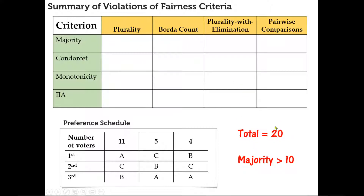Majority means more than half, so with 20 total votes, majority would be greater than 10. Under the plurality method, candidate A wins. Since A has a majority, plurality will never violate the majority criterion — a majority candidate is always going to get the most first-place votes, so they'll always win under plurality.